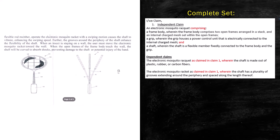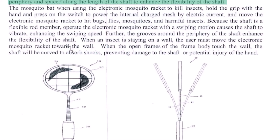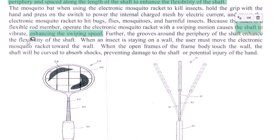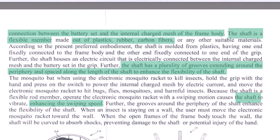Looking at the diagram, it clearly shows a flexible shaft. This is where they actually talk about how it enhances the swiping speed — an advantage — and how it causes the shaft to vibrate. So this completes the claim section.